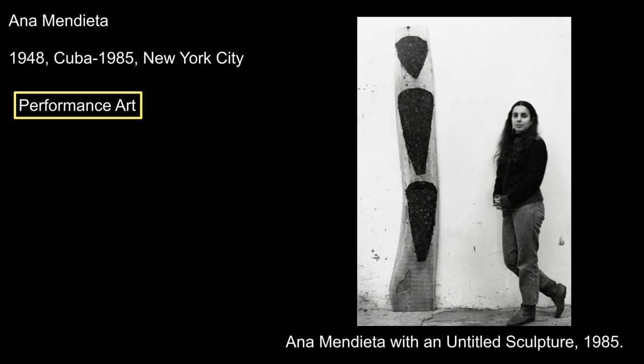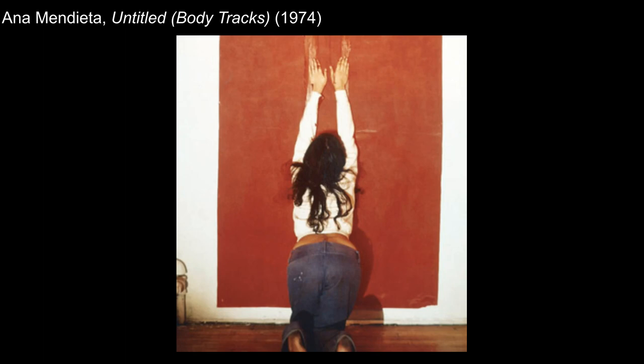Ana Mendieta similarly uses her body as subject, but instead of doing so in painting or photography, she does so in performance and earth or body art. She immigrated to the U.S. from Cuba as a child and studied painting at the University of Iowa, branching out into other arenas of art production. She began working in performance art, creating temporary works of art in which an artist performs some sort of action that is documented in video or photos. She responds to violence and sexual violence in her Body Tracks series, with early versions showing her running her hands purposefully through red paint mixed with animal blood as she creates a track or path through the pigment. This is an extension of the performance art we talked about with Dada and Futurism, and the emphasis on process and the artist's actions that we saw in action painting with Pollock.